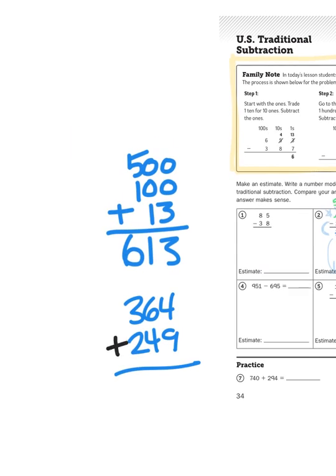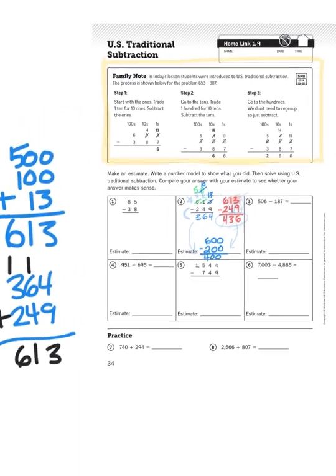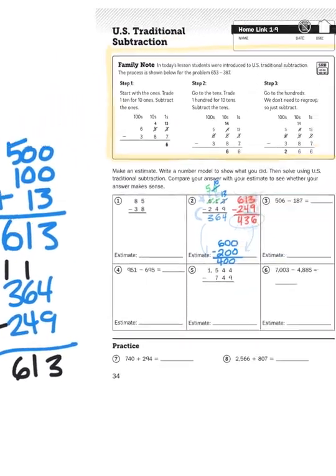Let's see if that works. 4 plus 9 is 13. I'm going to carry that 10. 6 plus 1 is 7. 7 plus 4 is 11. Carry that 10, group of 10s, otherwise known as 100. 1 plus 3 is 4. 4 plus 2 is 6. Oh, I was right. 613.